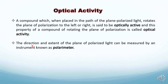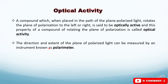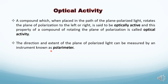The direction and the extent of rotation of plane of polarized light can be measured by an instrument known as a polarimeter, which we studied in the previous lecture. So now in this lecture we will see how it works.